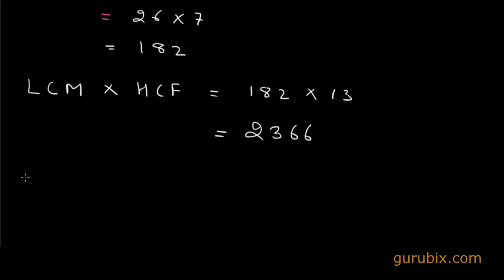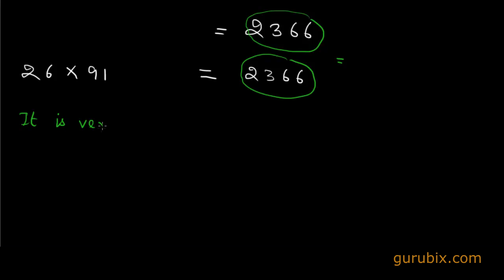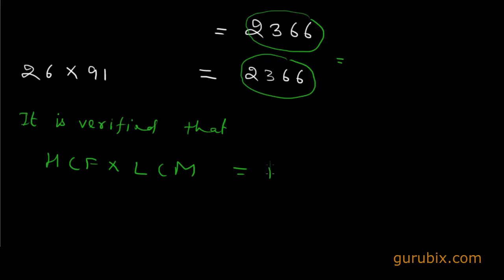Now we multiply the numbers themselves: 26 × 91 also gives 2366. These two results are the same, so it is verified that the product of HCF and LCM is equal to the product of the numbers. This is the solution of the question.